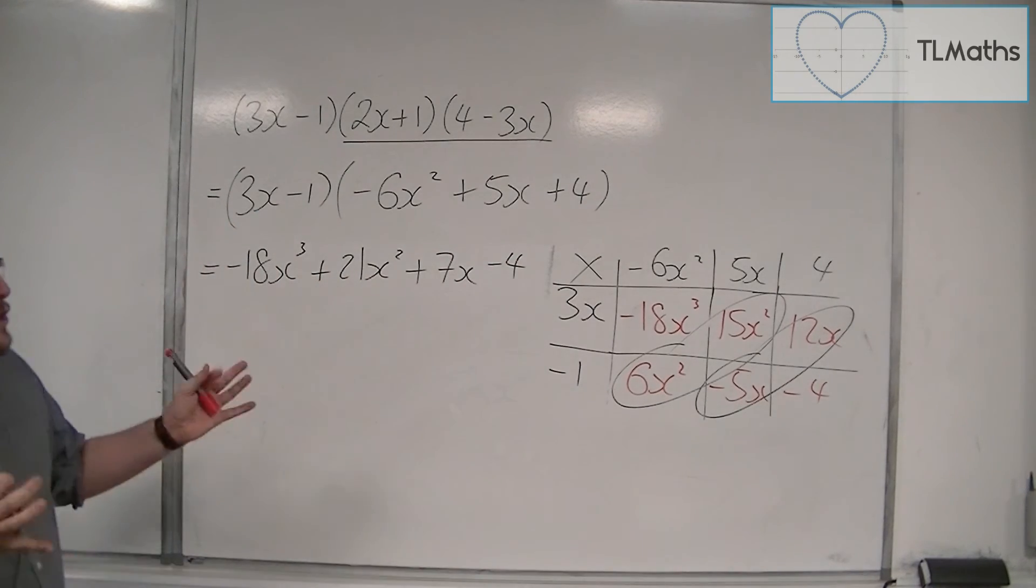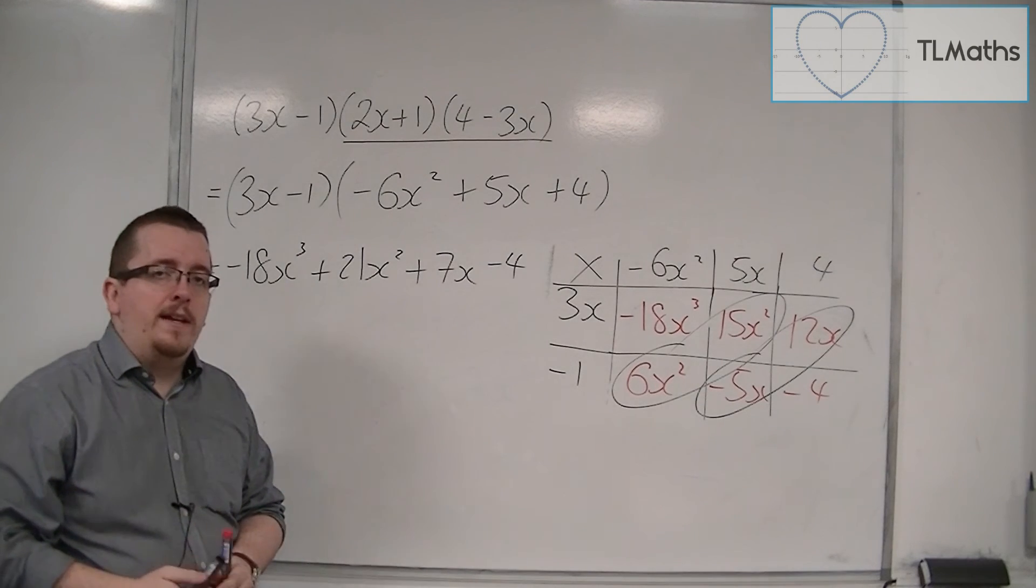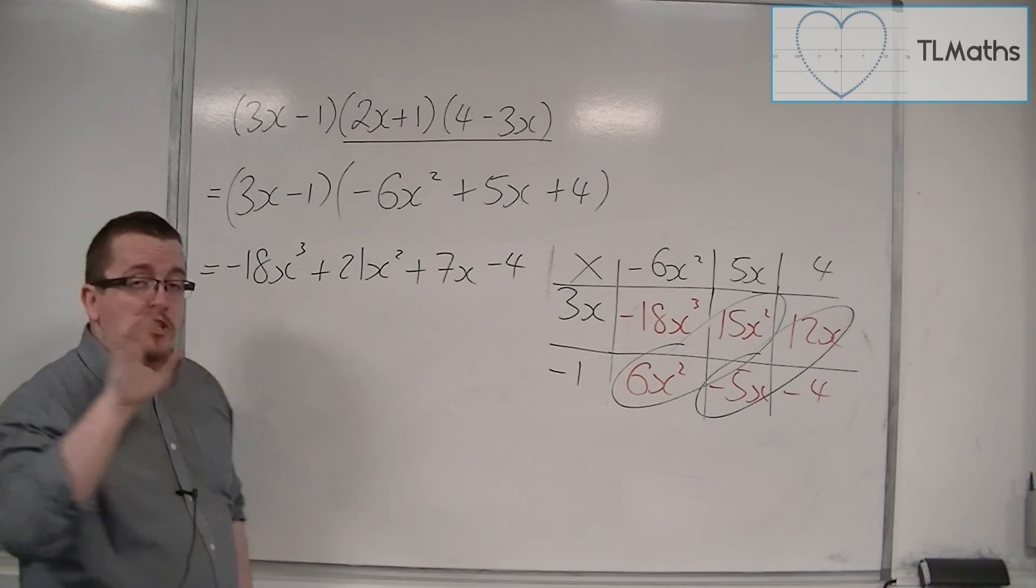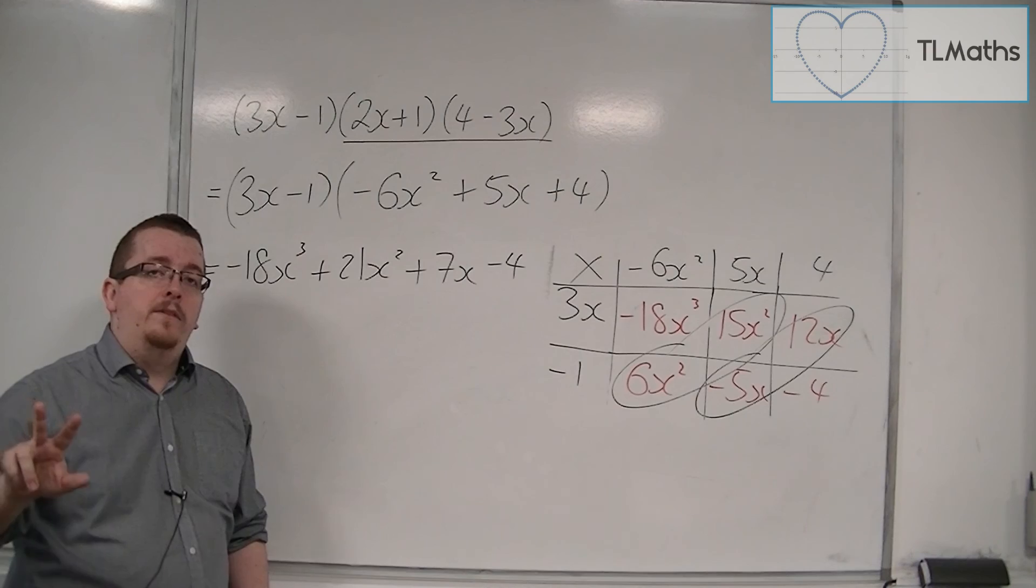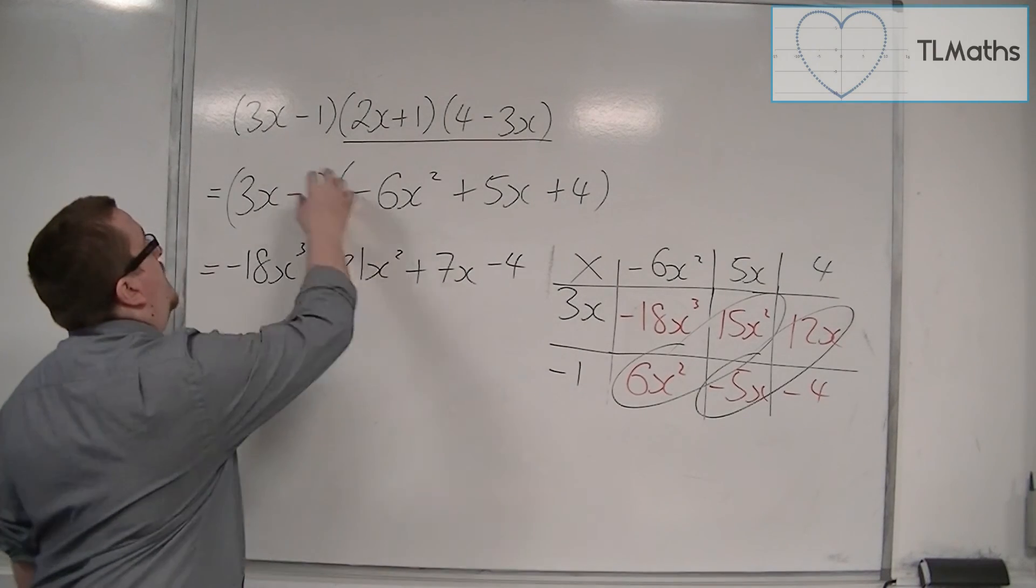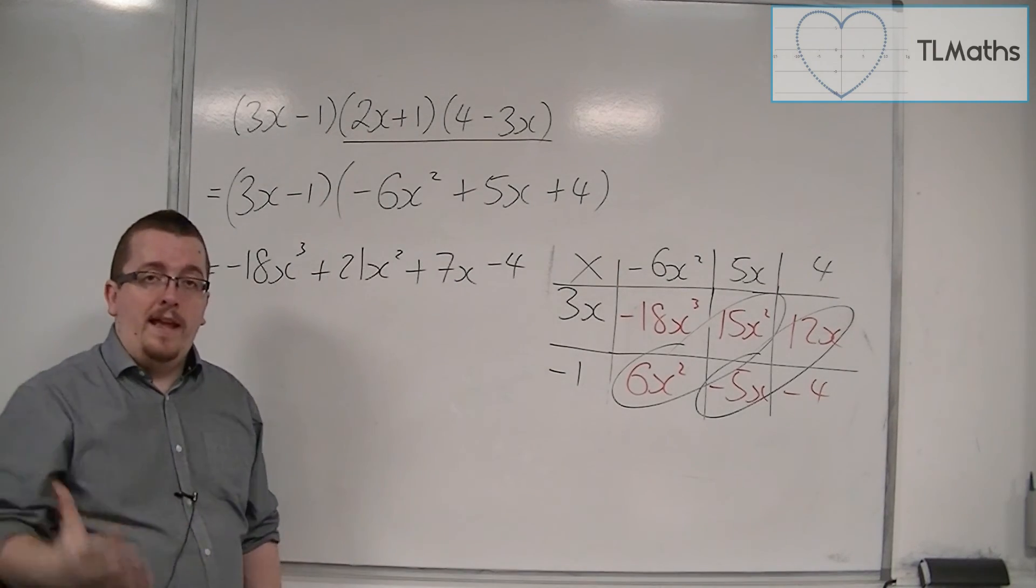Okay, so that's how you can expand out triple brackets. Start by choosing two of the brackets to multiply out. Expand those and then multiply out the two brackets that you have left.